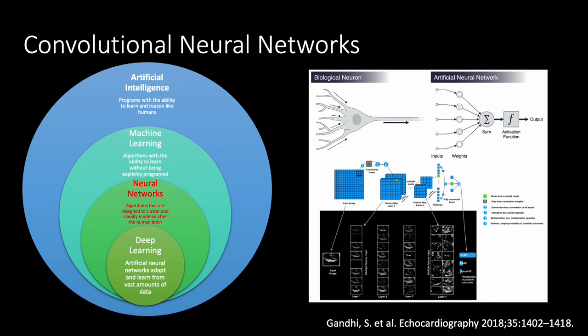One important thing to understand about these algorithms is that they don't give you a yes or no. What they do is take the input — which would be the images in our case — and provide an output that is a probability of what you're looking at. For instance, if you were looking at the apical four chamber view, it gives you a probability that the image in front of you is a four chamber view. You have to remember that when interpreting these results.